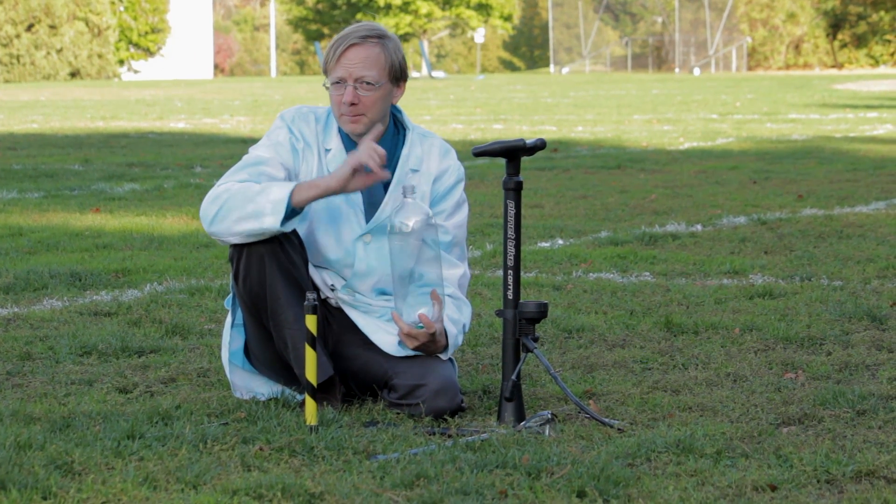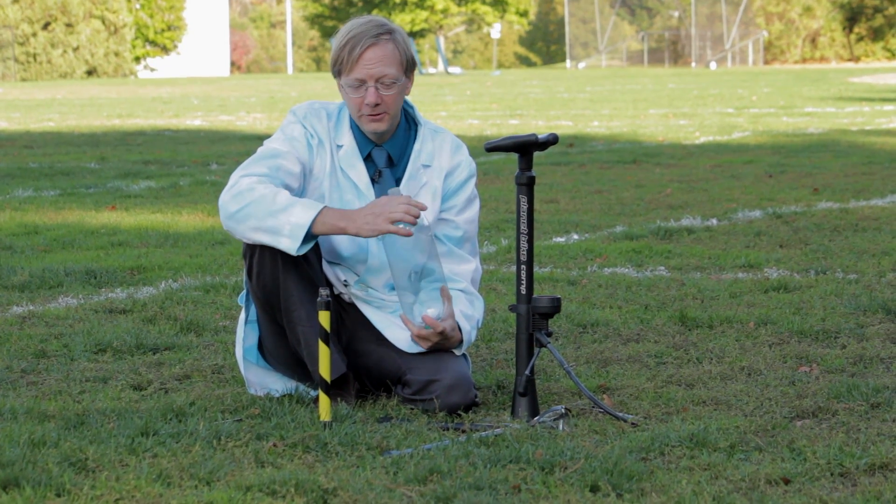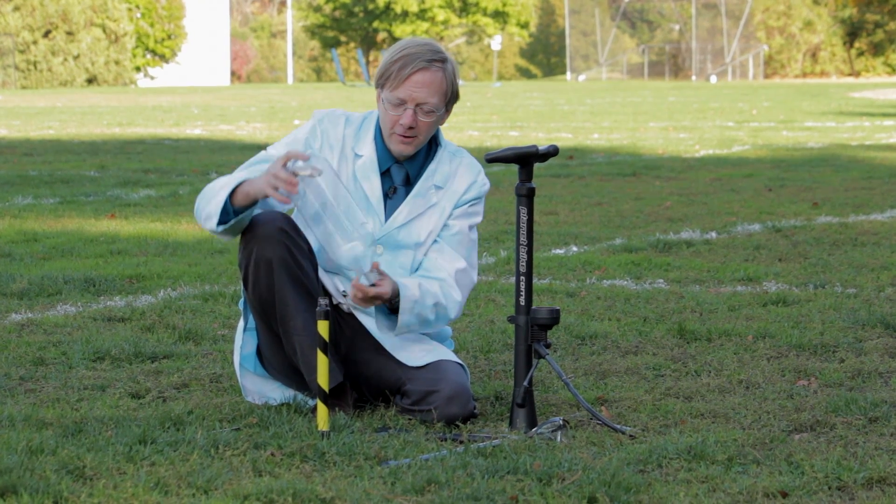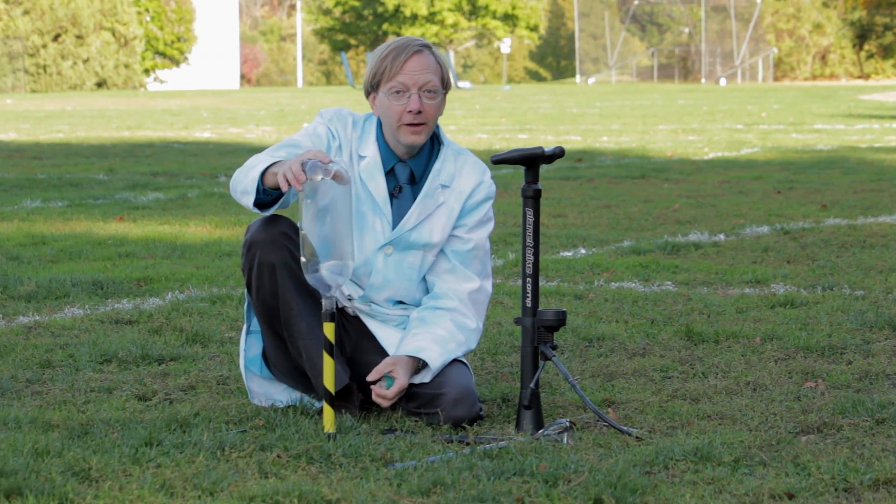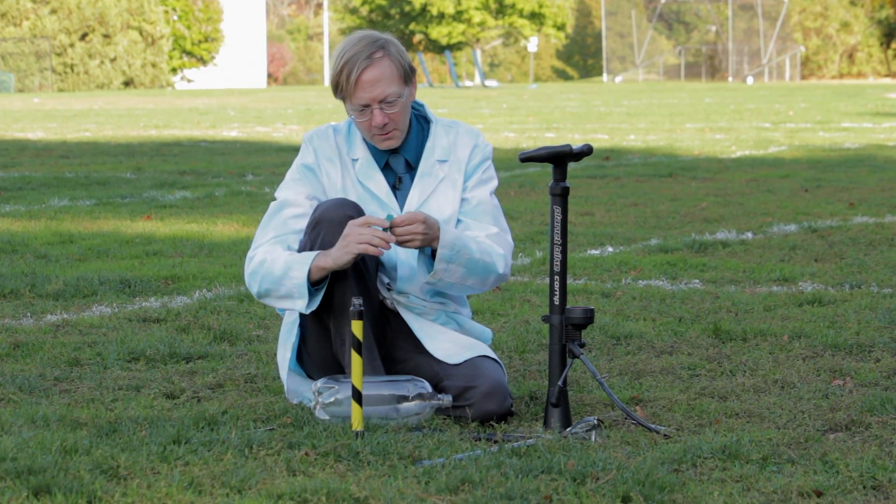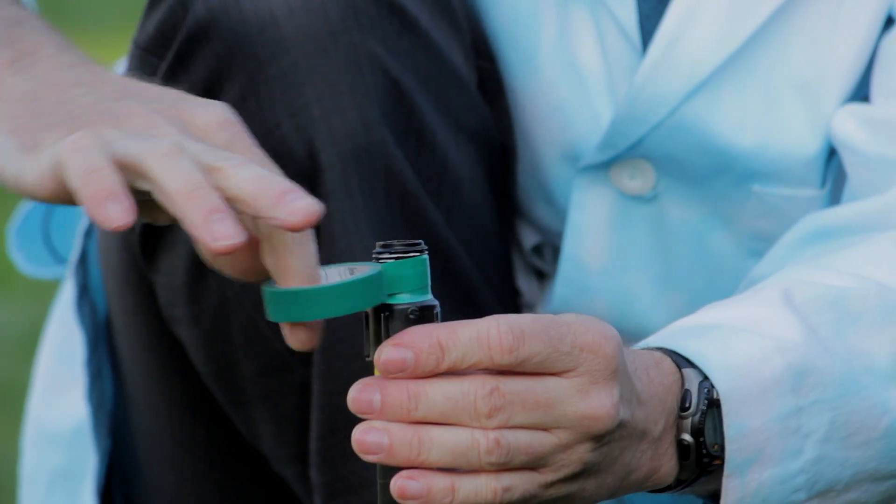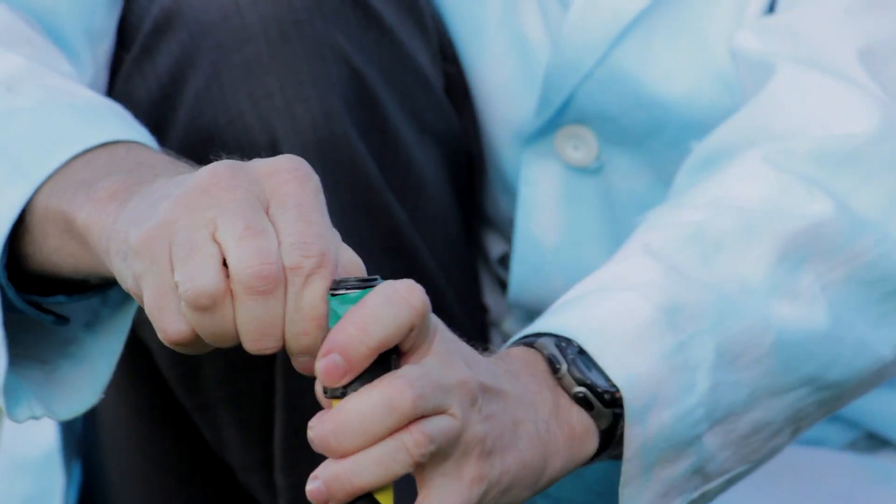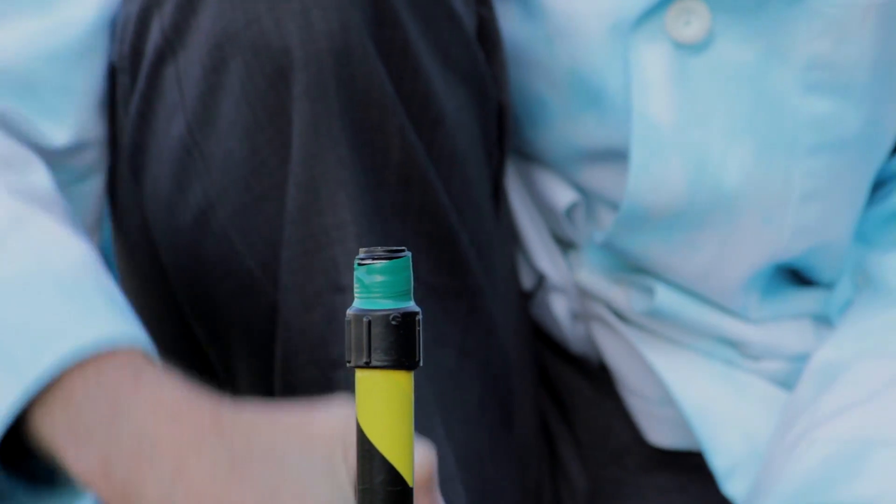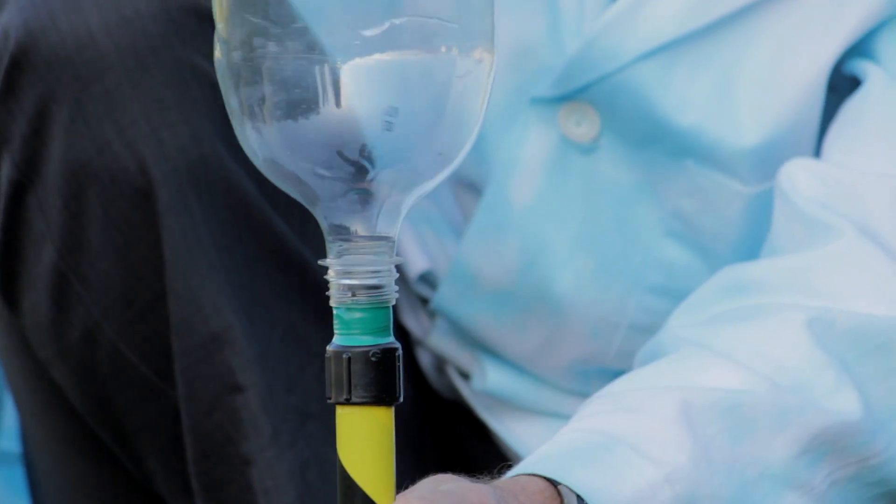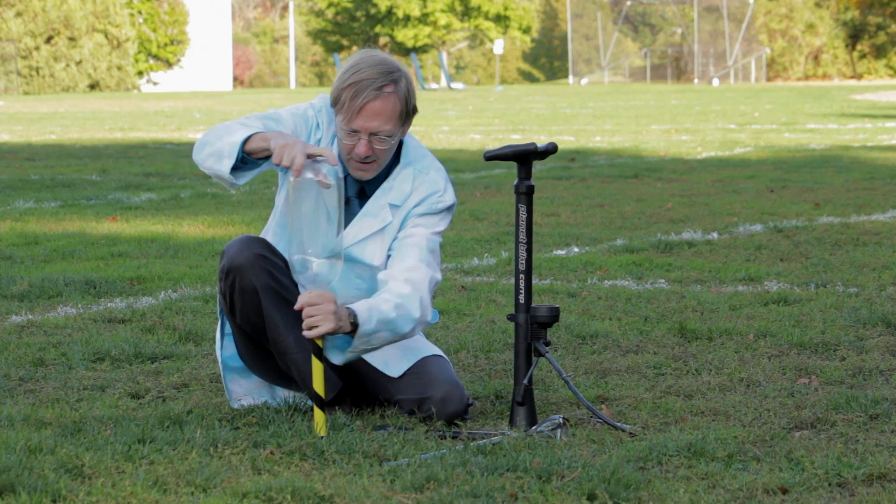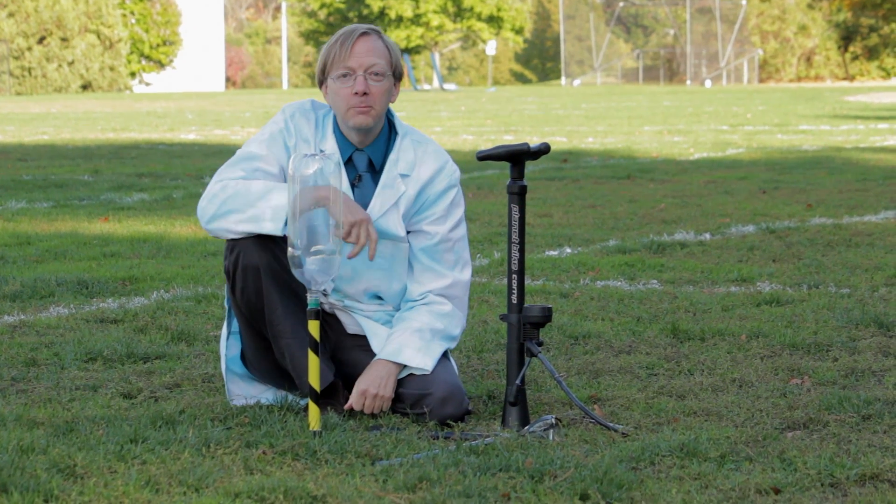All right, so here we are in the beautiful outdoors ready to launch our bottle rocket, but we have one last adjustment we need to make. Right now this bottle is a little loose onto this cap, so to fix that we're going to take a little bit of electrical tape and wrap it around the threads of the adapter. Keep doing that a little bit at a time until you get a nice snug fit.